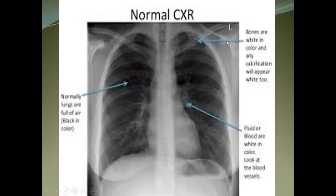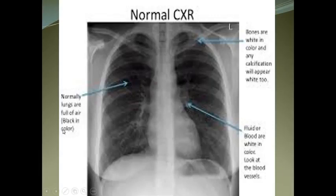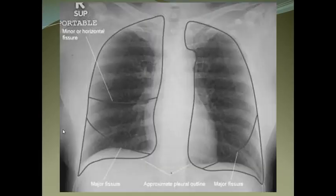Bones are white in color, and calcification also appears white. Fluid or blood also appears white, sometimes seen in vessels. Normal air is black. The minor fissure and the oblique (major) fissures are also identifiable on the X-ray.